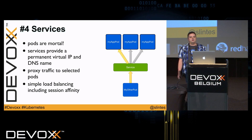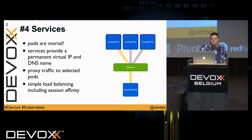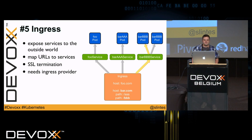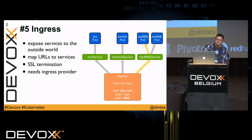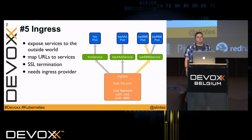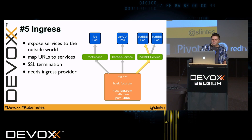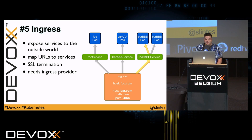Many services are used for internal communication within your cluster only, but usually you want to access your pods from the outside — for example for web applications. Here we have ingresses. Ingresses expose services to the outside world by mapping a URL to services, and they can also handle SSL termination. For an ingress you need an ingress provider. When running on a public cloud like Amazon or Google, they provide an ingress provider with their own load balancer. For a private cloud, you can currently use an nginx controller provider — the only one offered by Kubernetes, but more are coming.